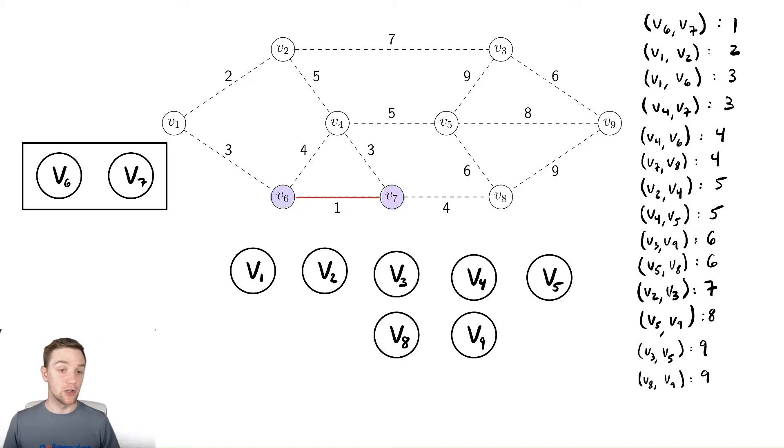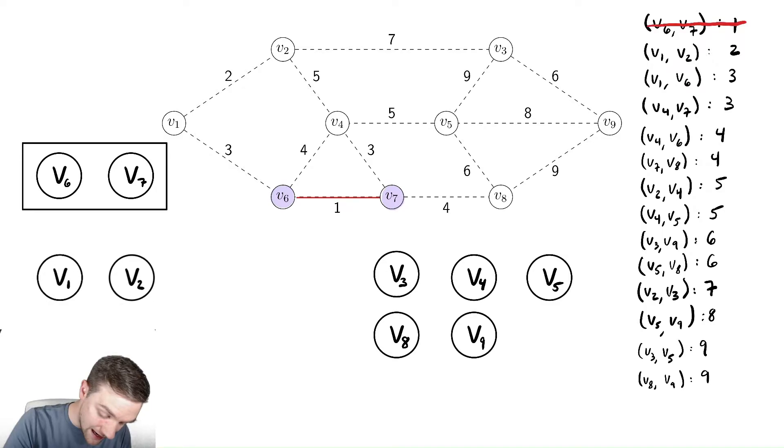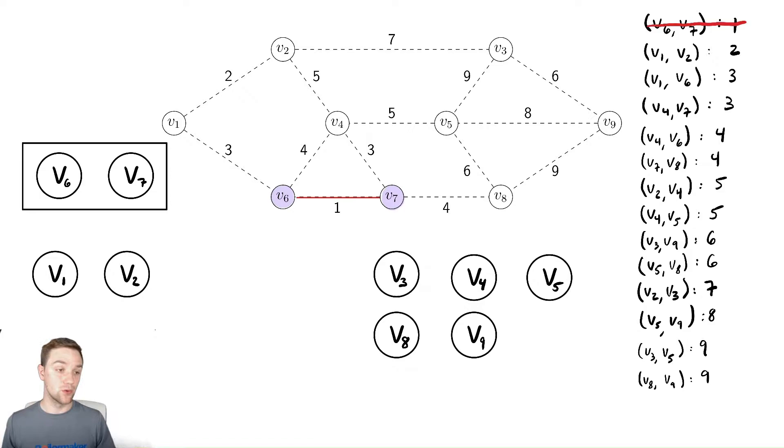Now what we're going to do is look for the next minimum weight edge. So we remove this from our list, then we look for the next smallest edge. The next smallest edge is v1, v2. So we're going to take v1 and v2 and add them to our minimum spanning tree. Notice that they aren't connected to v6 or v7, so we haven't constructed a tree yet. We are just adding edges as we go, and eventually we will hopefully have a tree as we do this.